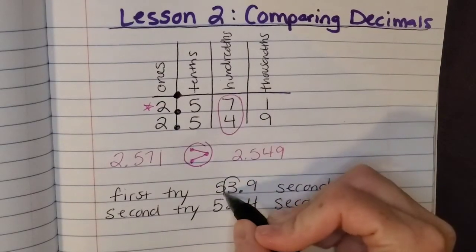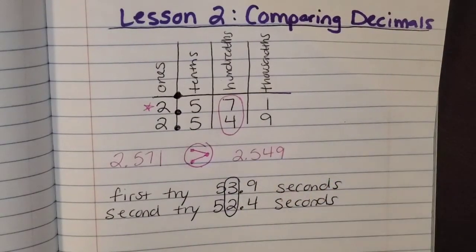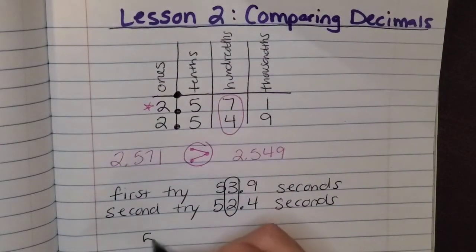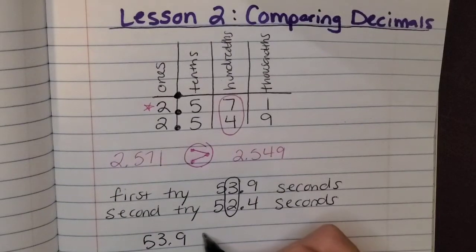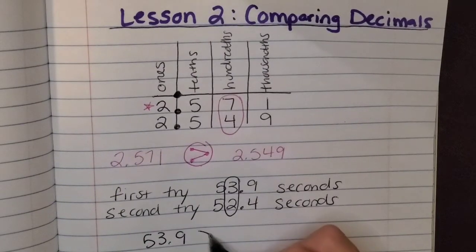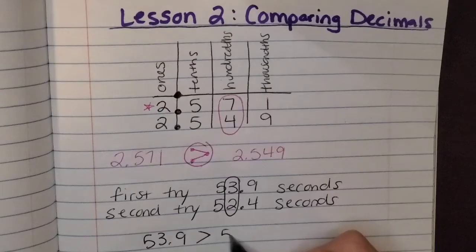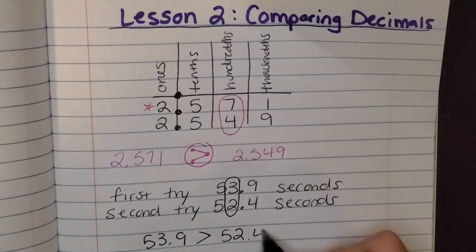Okay, and I always like to circle the place I'm comparing. That's the least place value I need to compare to figure out which number is greater. Okay, so 53 and 9 tenths is greater than 52 and 4 tenths.